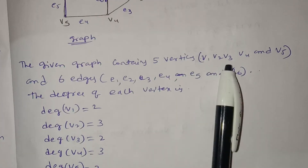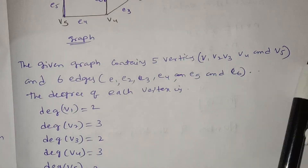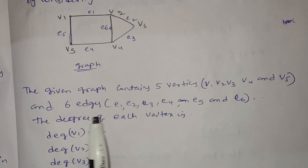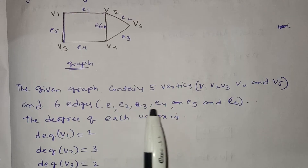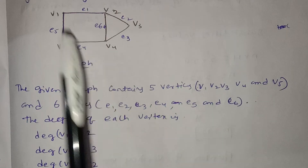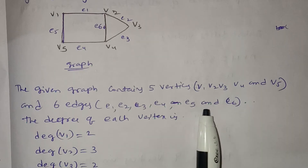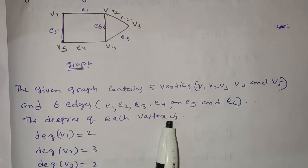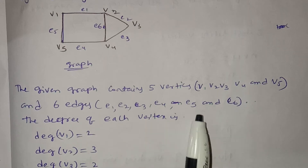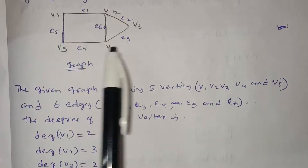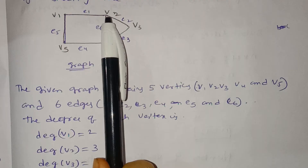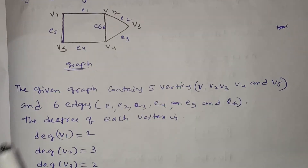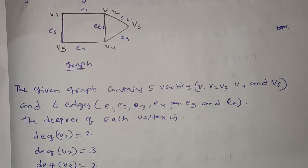The graph contains 5 vertices: v1, v2, v3, v4, v5. The degrees of each vertex are noted for v1, v2, v3, v4, and v5.